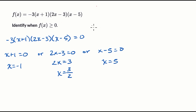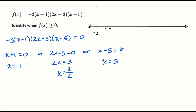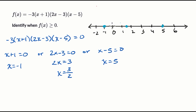Let me draw that on a number line. I have negative one, three halves, and five. So here's negative two, negative one, zero, one, two, three, four, five, and six. Our zeros are at x equals negative one, x equals three halves — which is the same as one and a half — and x equals five. Now let's think about what is happening on every side of and in between these zeros.